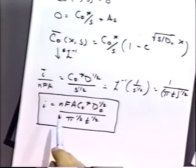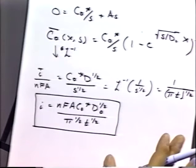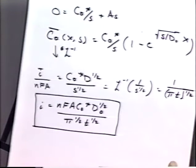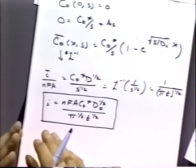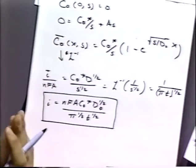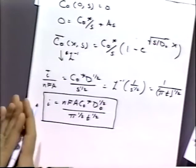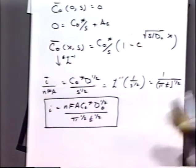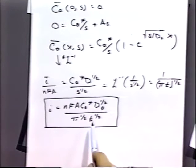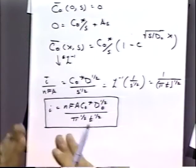Looking at the Cottrell equation, we see a couple of key properties. First, the current is predicted to be infinite at time equal to zero — just past t = 0. That discontinuity makes sense: at very short time scales, the concentration gradient at the electrode surface is extremely large. The other property is that the current decays to zero at infinite time, since the t^(1/2) term in the denominator grows large. Between zero and infinity, the current decreases with a t^(-1/2) functional form.